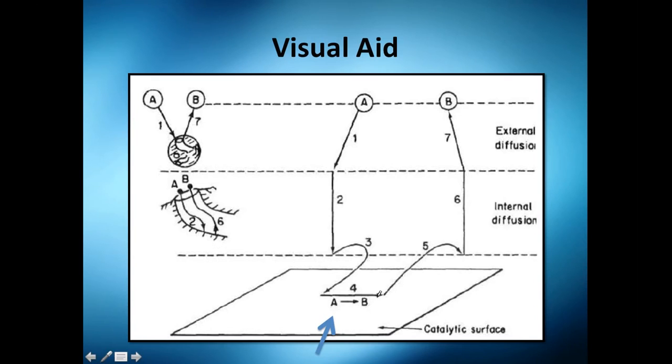Let's continue now with step number four, which is the reaction of A to B on our catalytic surface. Previously we've seen external diffusion and internal diffusion. Now the reactant achieves our active site.